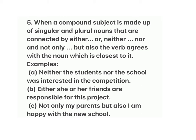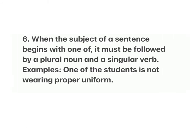Rule 5: When a compound subject is made up of singular and plural nouns connected by 'either...or', 'neither...nor', or 'not only...but also', the verb agrees with the noun closest to it. Examples: (a) Neither the students nor the school was interested in the competition. (b) Either she or her friends are responsible for this project. (c) Not only my parents but also I am happy with the new school.